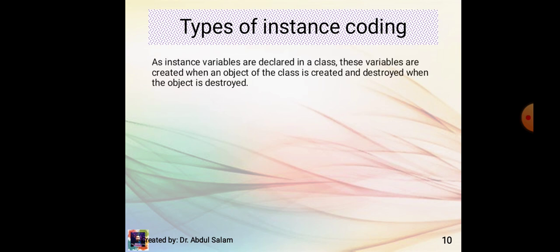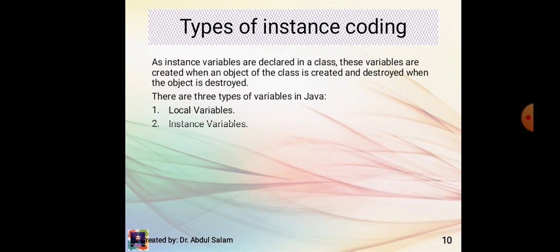Types of instance coding: instance variables are declared in a class and are created when an object of the class is created, and destroyed when the object is destroyed. There are three types of variables in Java: local variables, instance variables, and static variables.